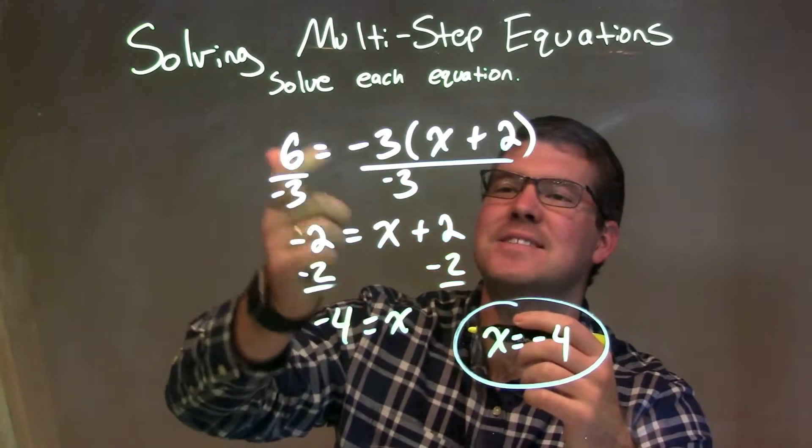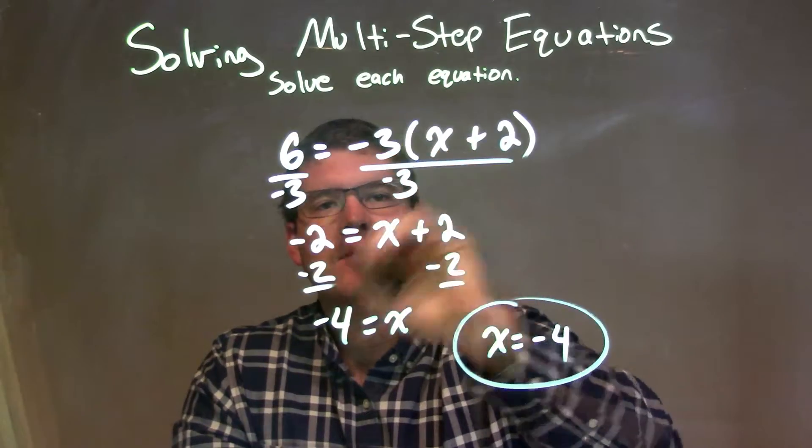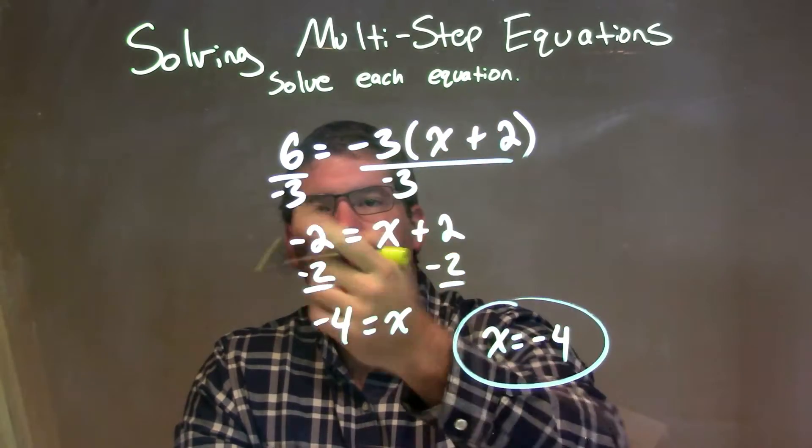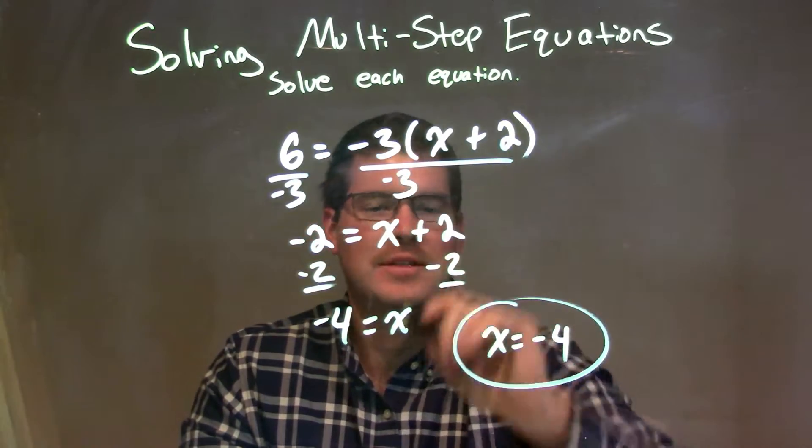We're given 6 equals a negative 3 times x plus 2. Well, I see that multiplication outside the parentheses. So I'm going to divide by negative 3 to both sides, leaving the negative 2 on the left. And that's equal to an x plus 2, which is left on the right.